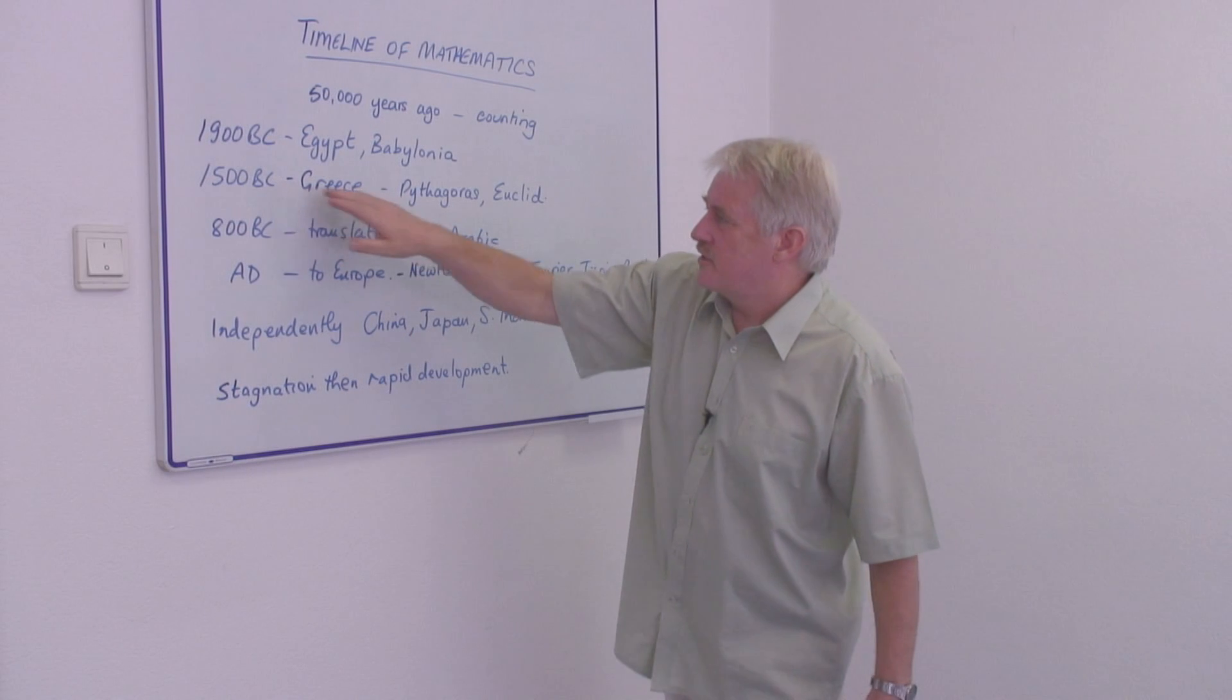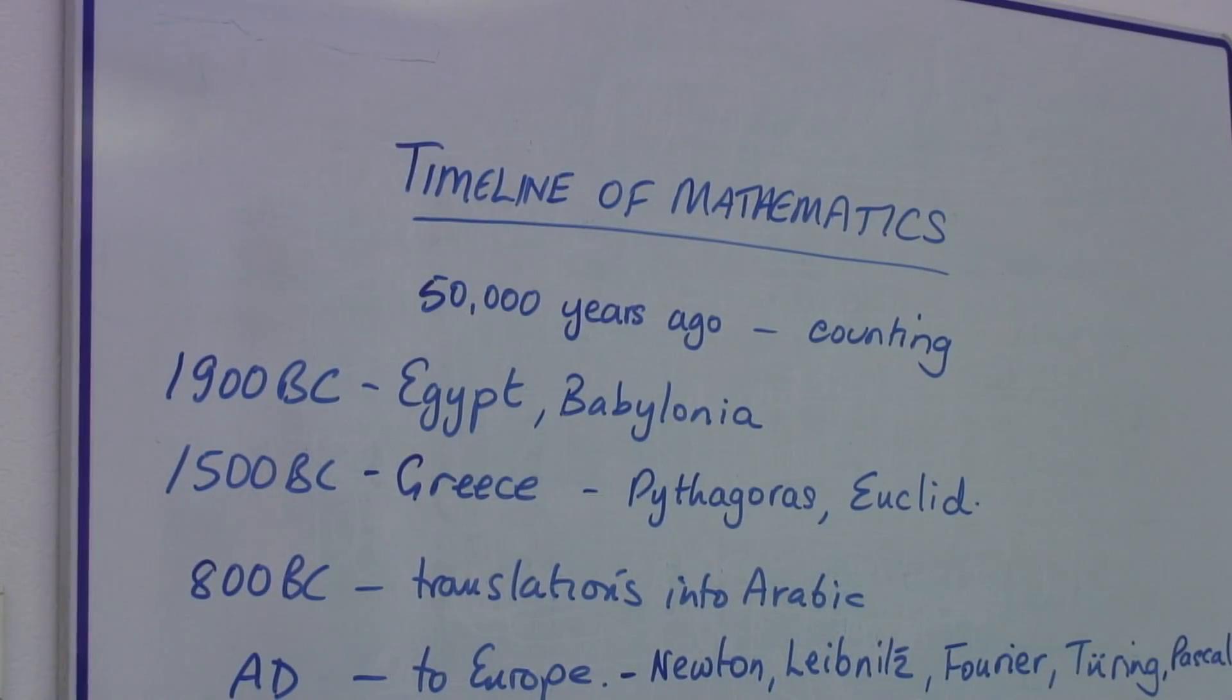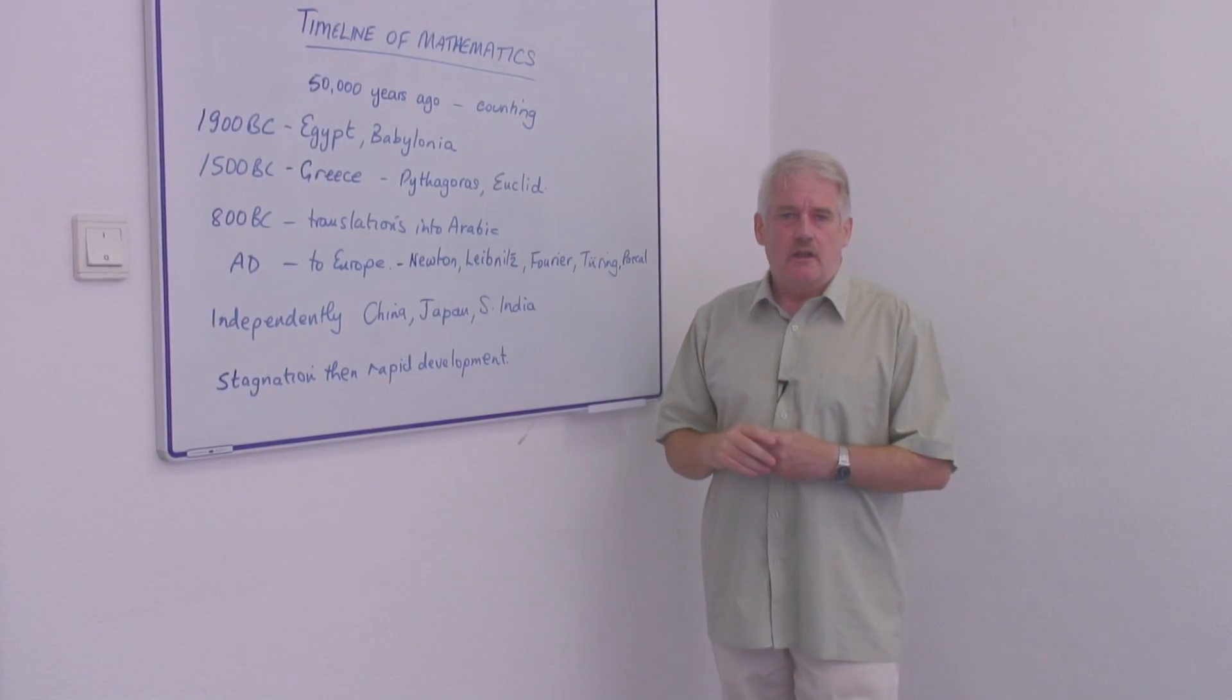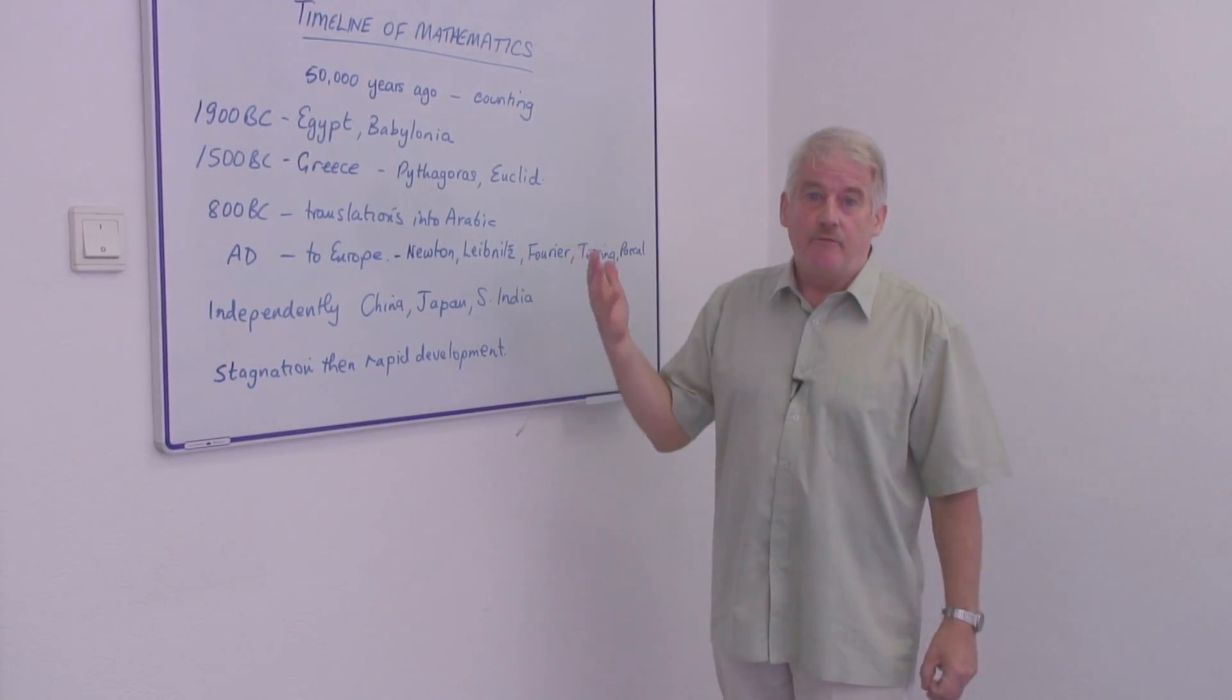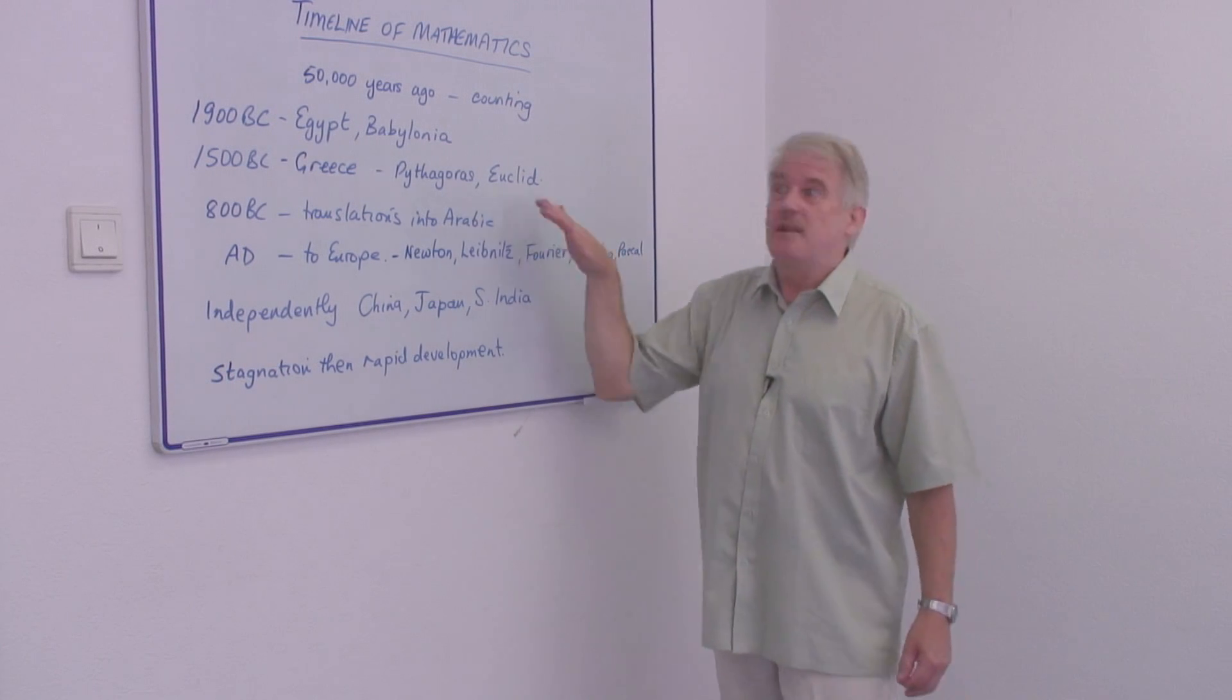Later, obviously the Greeks. Now we are all familiar with the Greeks, particularly people like Pythagoras and Euclid who were dealing with geometry. And geometry was very fundamental in building, obviously, and the Greeks were very big builders.